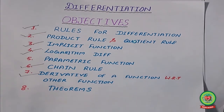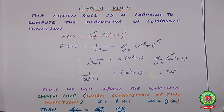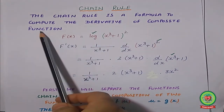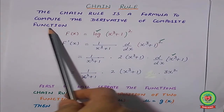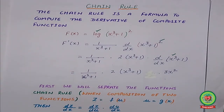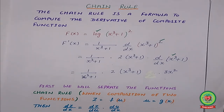Before starting today's topic, let's discuss first what is the chain rule. A chain rule is a formula to compute the derivative of a composite function. Composite function means a combination of two or more functions. Whenever we differentiate a function, it is already a combination of two or three functions. But if a particular problem says to solve the functions by chain rule, then we have to apply the chain rule.